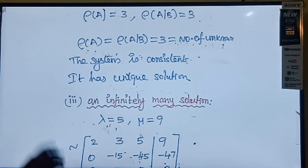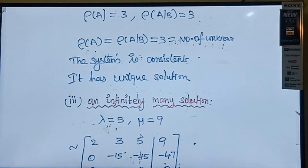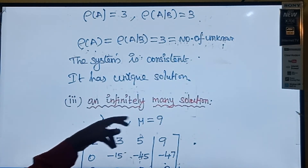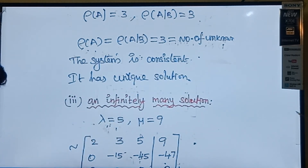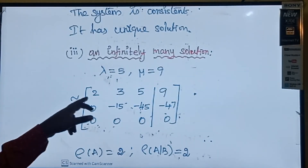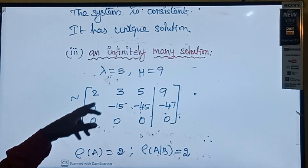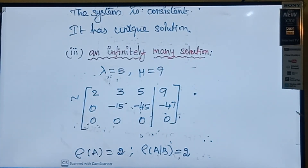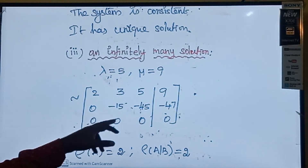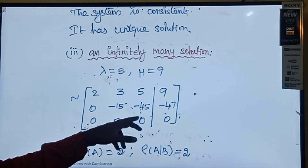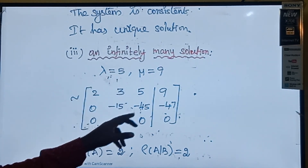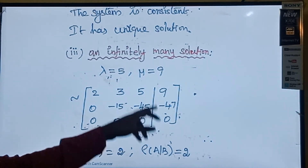For infinitely many solutions, we know that rank of A must equal rank of A|B, but the number of unknowns must be greater than the rank. So we put lambda=5 and mu=9. Substituting: the matrix becomes [2, 3, 5, 9], [0, -15, -45, -47], [0, 0, 0, 0], since 5-5=0 and 9-9=0.